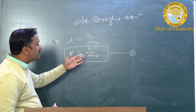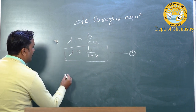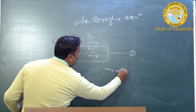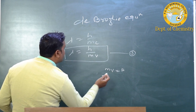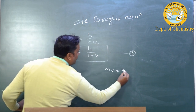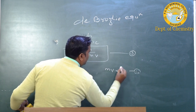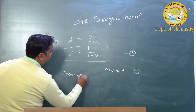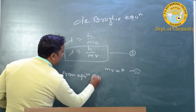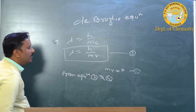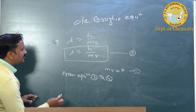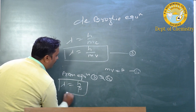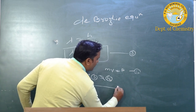We can also extend the de Broglie equation. We know that mass times velocity equals momentum (p = mv). So using this, from equation 3 we get another form: λ = h/p. This is another form of the de Broglie equation.